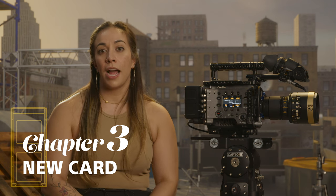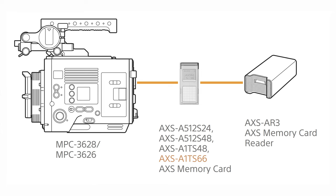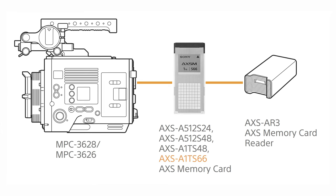With the newer sensor and higher resolution also comes a faster card. The S66 cards are available at 1TB capacity. The S48 cards, typically used with the original Venice, are also a viable option for the Venice 2. S48 cards unlock most of what the camera has to offer, but are not fast enough to capture at 8.6K 3:2 XOCN XT.